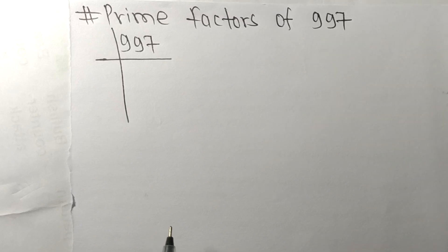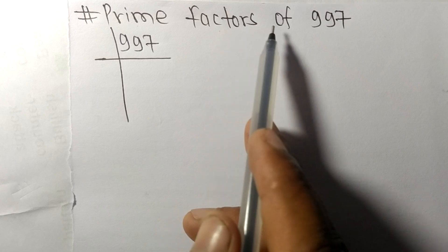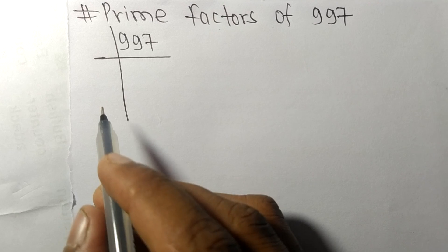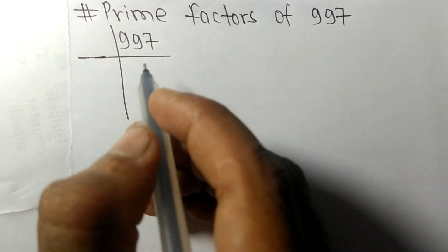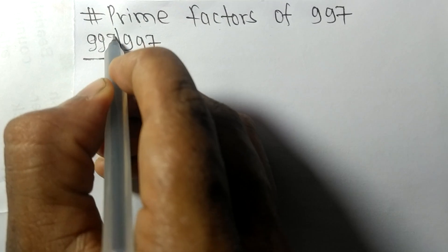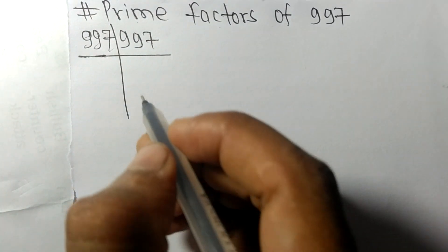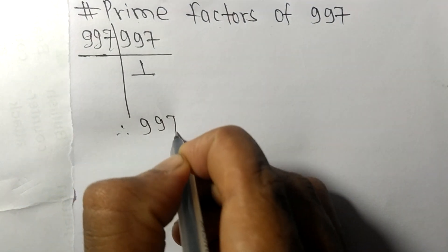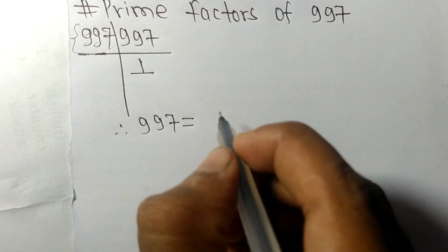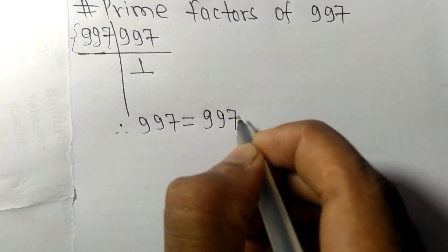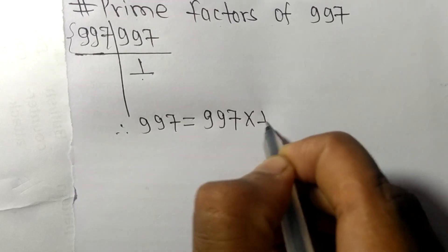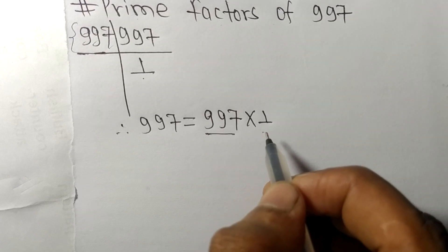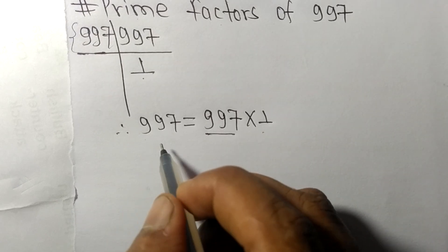Today we shall learn to find the prime factors of 997. 997 is a prime number, so it is exactly divisible by 997 only, and on dividing we get one. Therefore, 997 equals 997 times one, meaning 997 and 1 are the prime factors of 997.